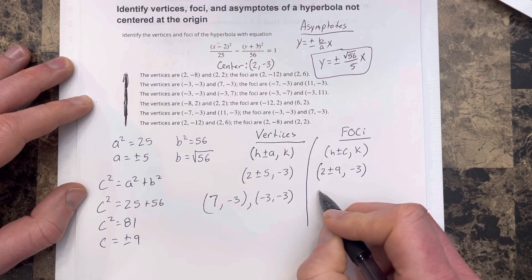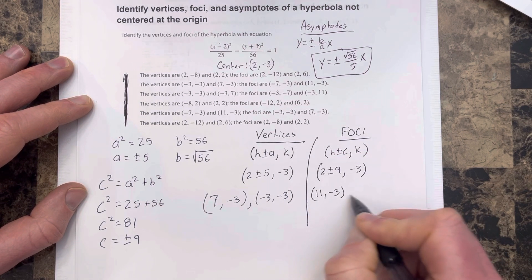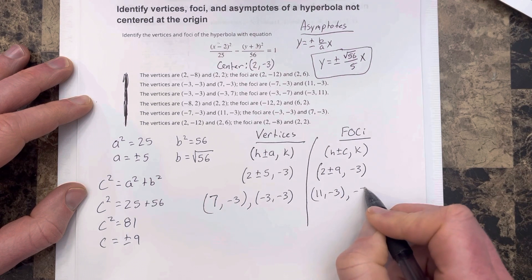And then the foci would be 11, comma negative 3, since 2 plus 9 is 11. And then 2 minus 9 would be negative 7, negative 3.